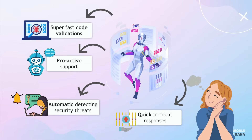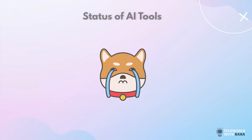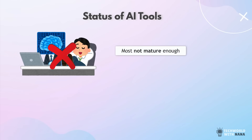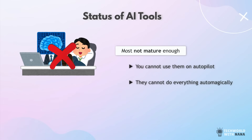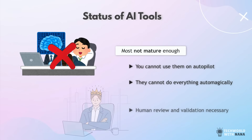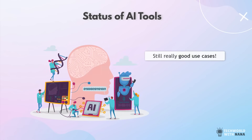Now, if this sounds too good to be true — well, because it is. Most AI tools right now aren't mature enough to use them on autopilot. You need to use them like any other tool. They can't do everything automagically for you. In fact, many of them still need a lot of human review and validation. But that doesn't mean that they are useless. There are still some really good use cases for AI tools right now.